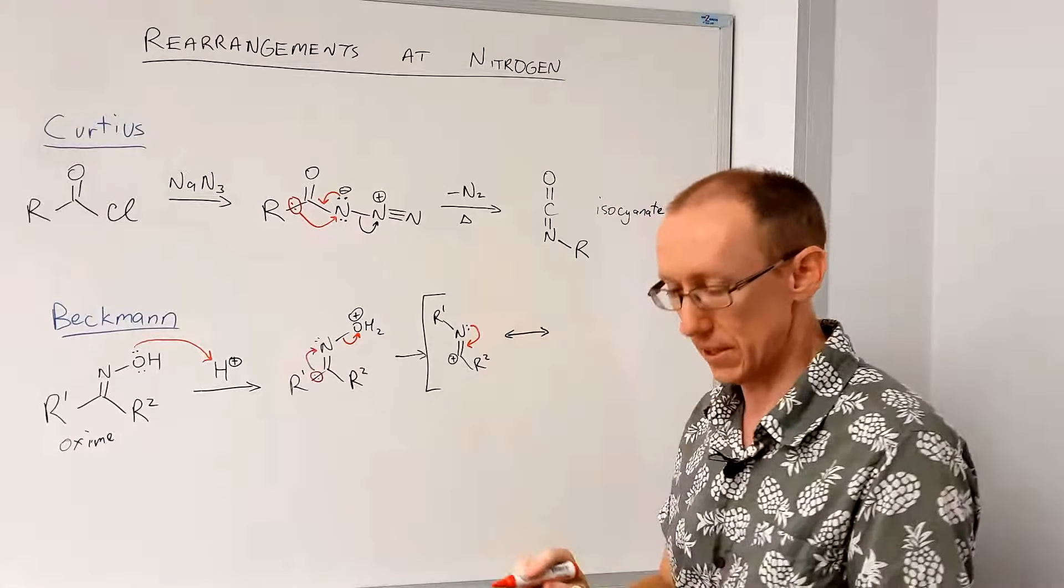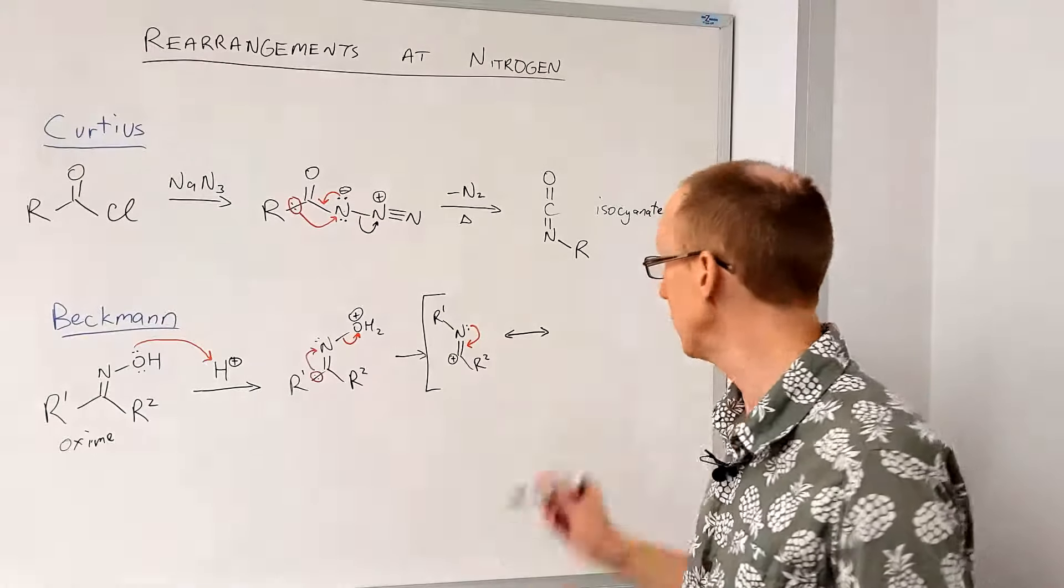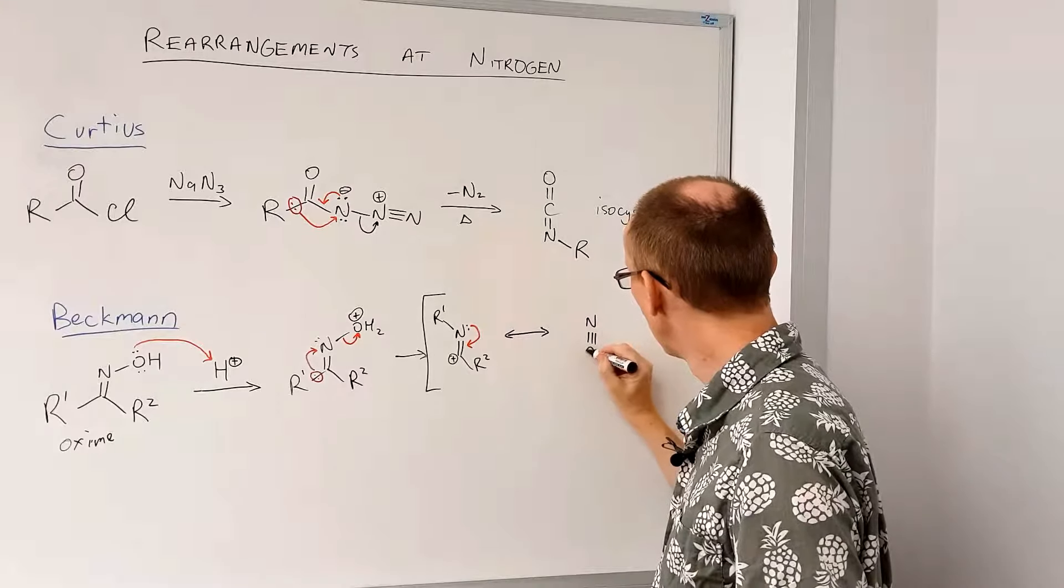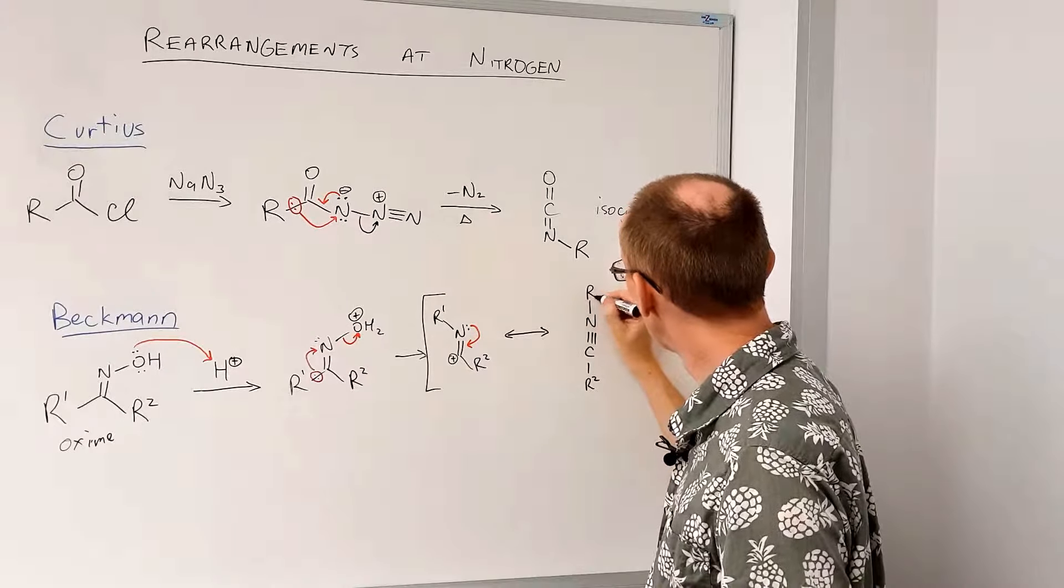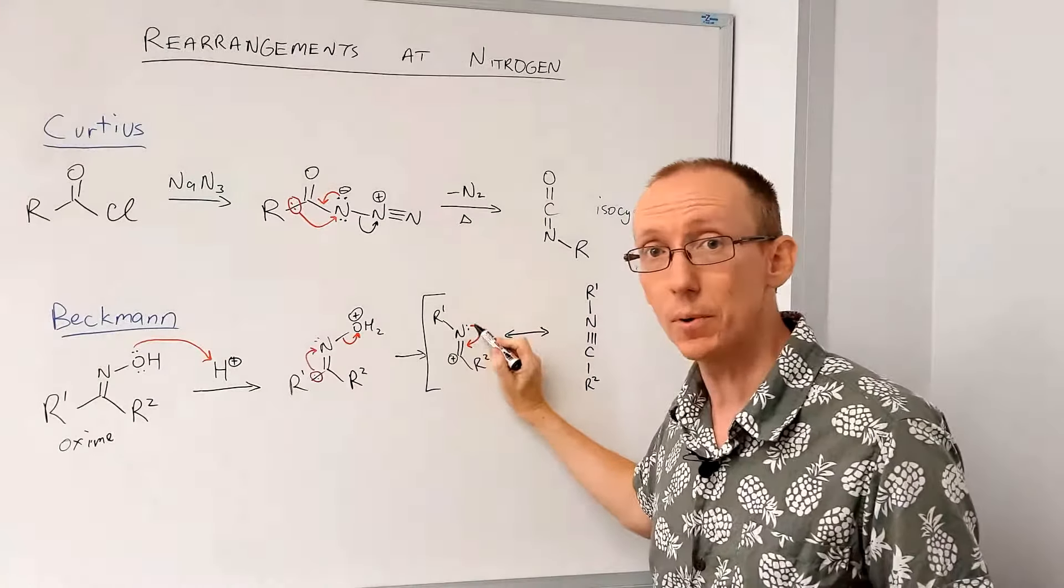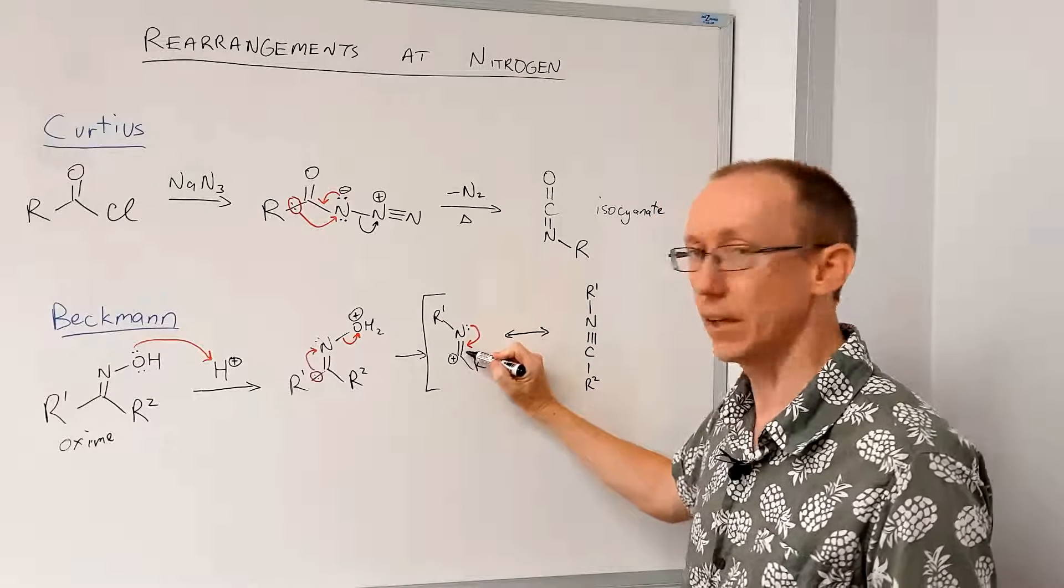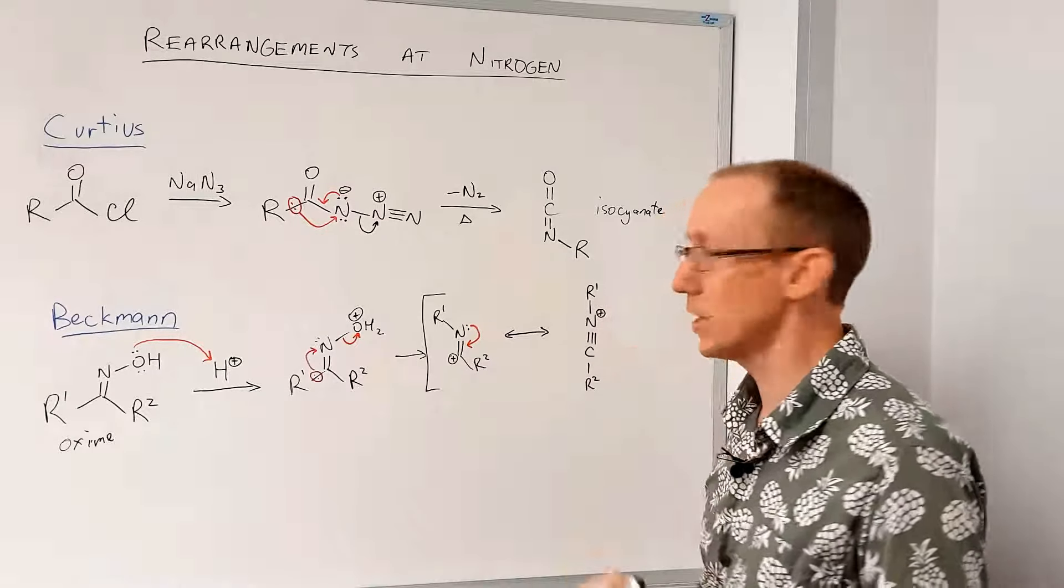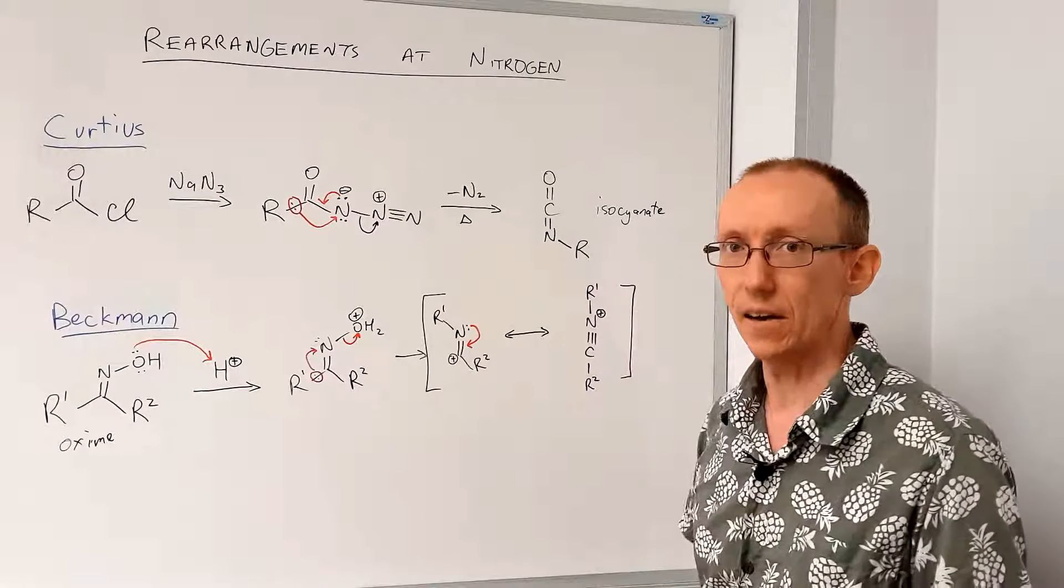And I'm going to redraw this in a linear arrangement because that's more accurate for the structure of this species. Okay, now this nitrogen had sole ownership of this lone pair of electrons, is now sharing with this carbon here. So it's gone from full ownership to sharing, so it's going to have a formal positive charge. And this is our other resonance form of that cation.